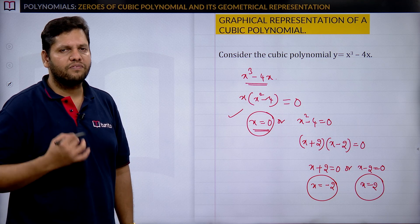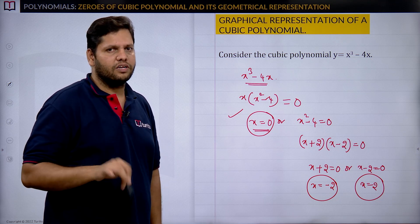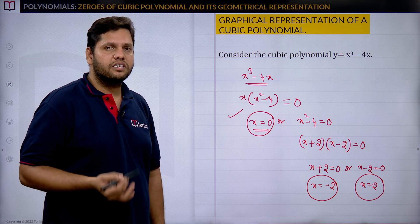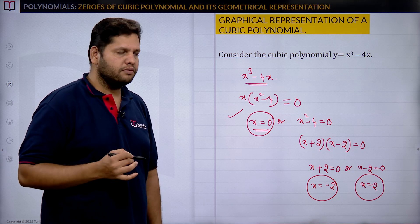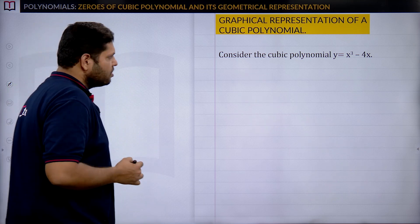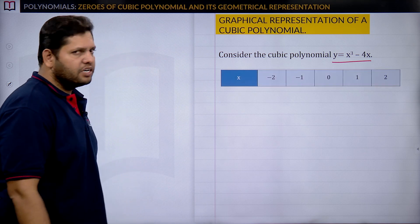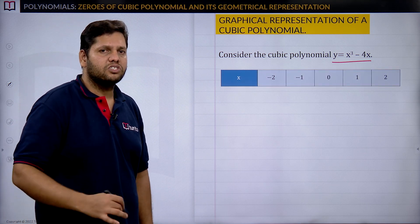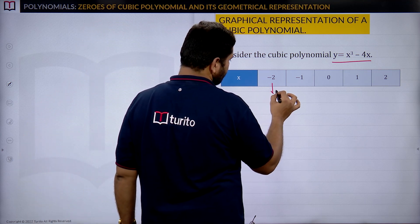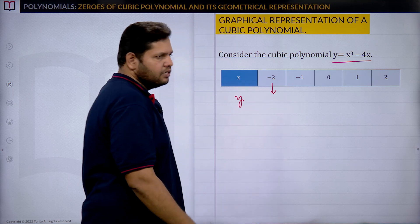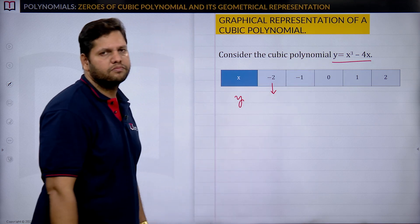We found these zeros theoretically. Now I want to find the same zeros practically, that is, graphically — by drawing the graph. Let us find the coordinates by substituting x values into y = x³ − 4x. I will take x = −2, −1, 0, 1, 2.